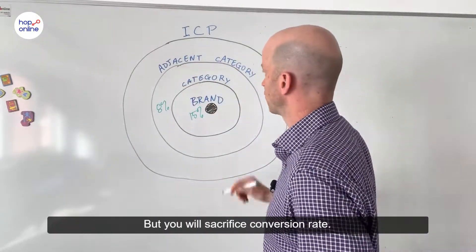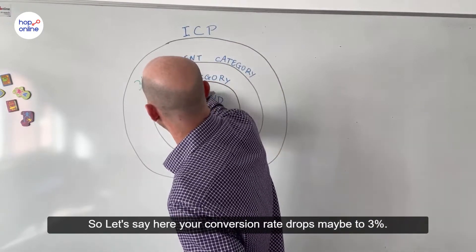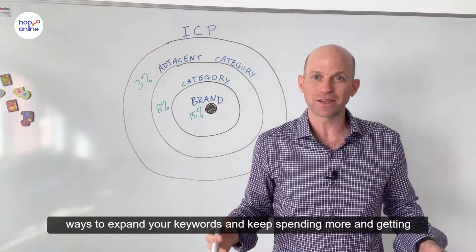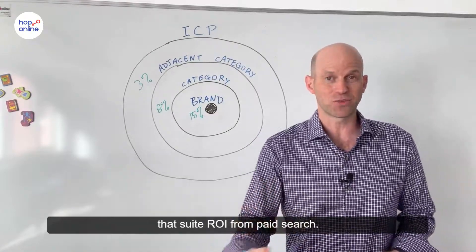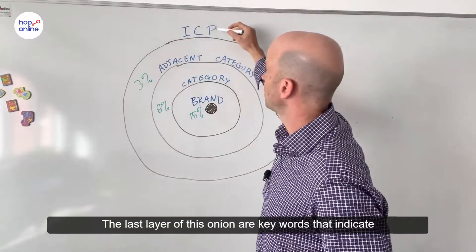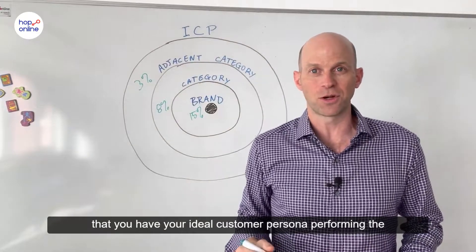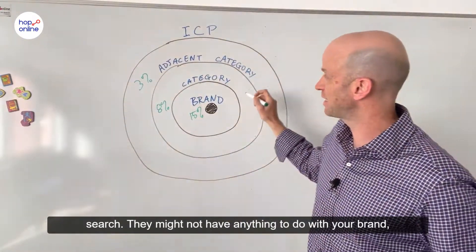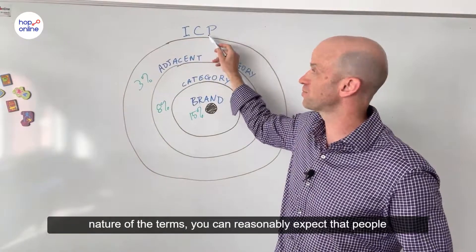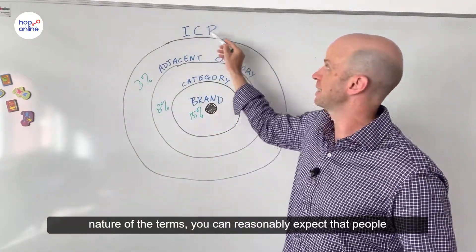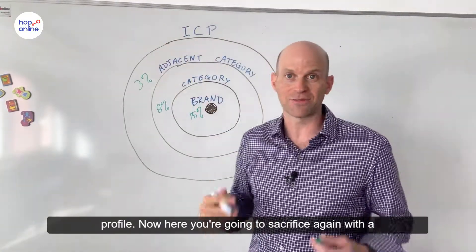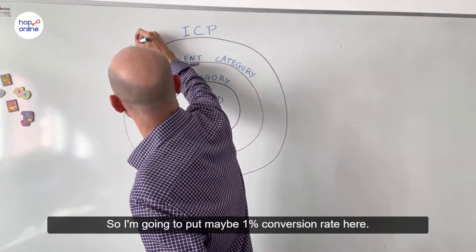But you will sacrifice conversion rate — so let's say here your conversion rate drops maybe to 3%. And if you've gone this far and you're still looking for ways to expand your keywords and keep spending more and getting that sweet ROI from paid search, the last layer of this onion are keywords that indicate your ideal customer persona is performing the search. They might not have anything to do with your brand, your category, or even adjacent categories. But due to the nature of the terms, you can reasonably expect that people searching for those terms fit your ideal customer profile. Here you'll sacrifice again with a lower conversion rate — maybe 1%.